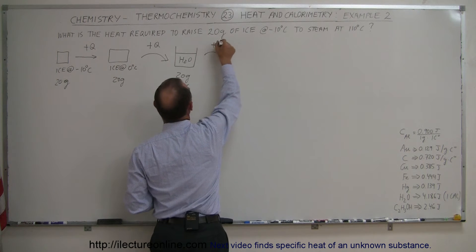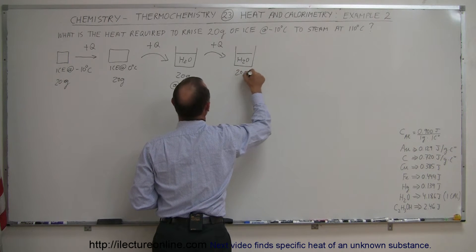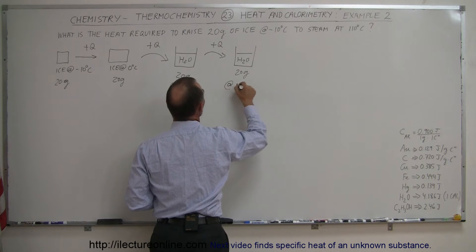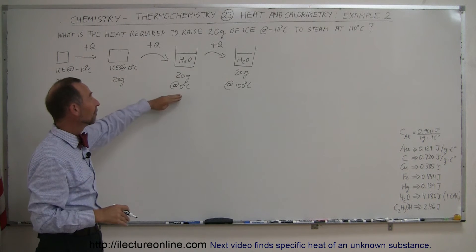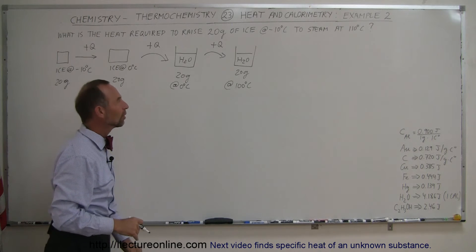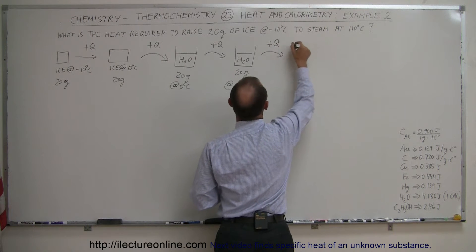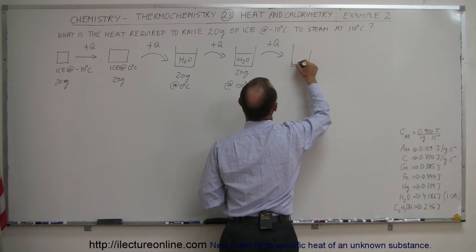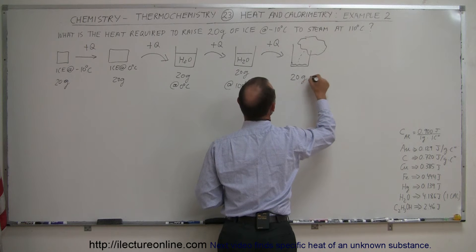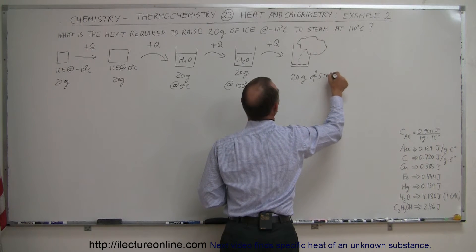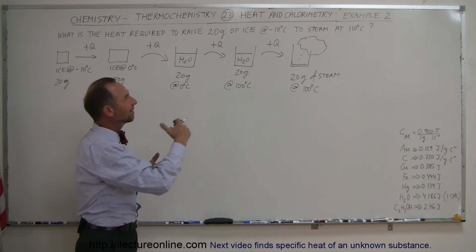Then if we add some more heat, eventually we'll have H₂O — still 20 grams of water — but now at 100 degrees centigrade. We keep adding heat and the temperature keeps going up until it reaches 100 degrees centigrade. When you continue to add heat, the water will begin to boil away, and as it does, it turns into steam. We'll end up with 20 grams of steam, still at 100 degrees centigrade — a second phase change.